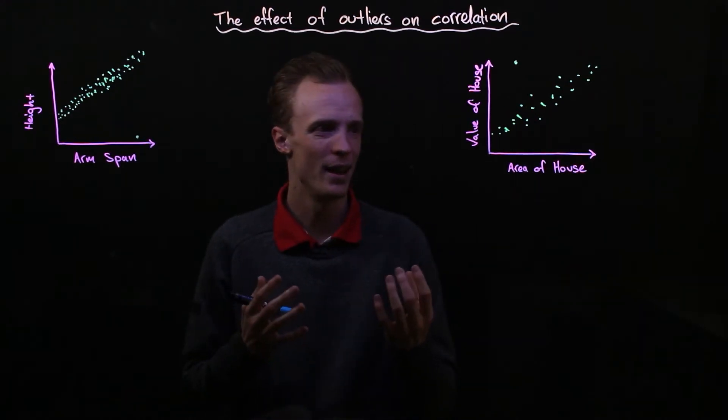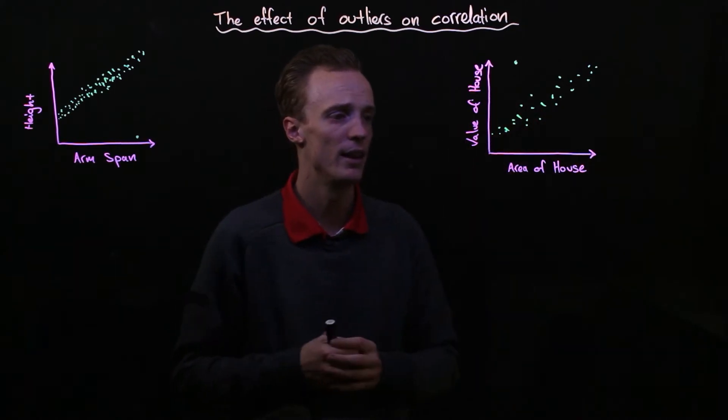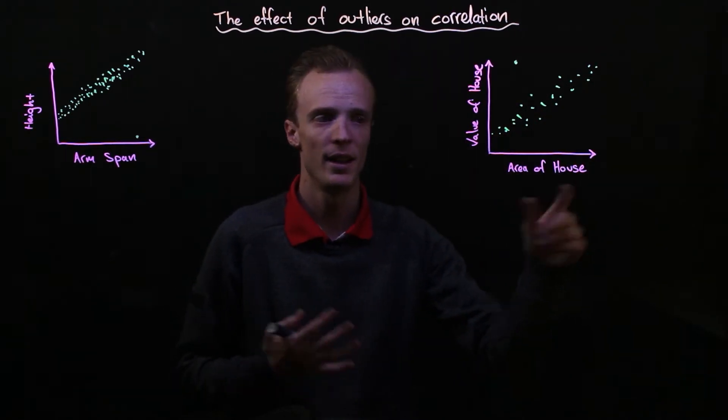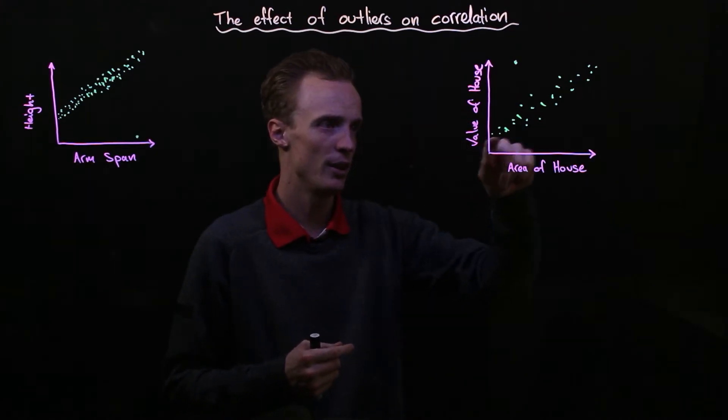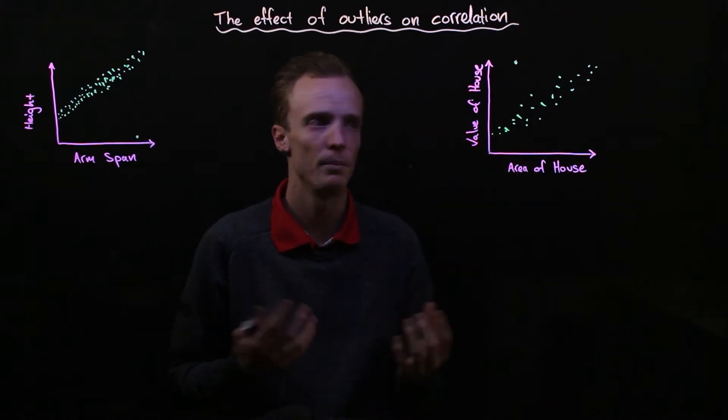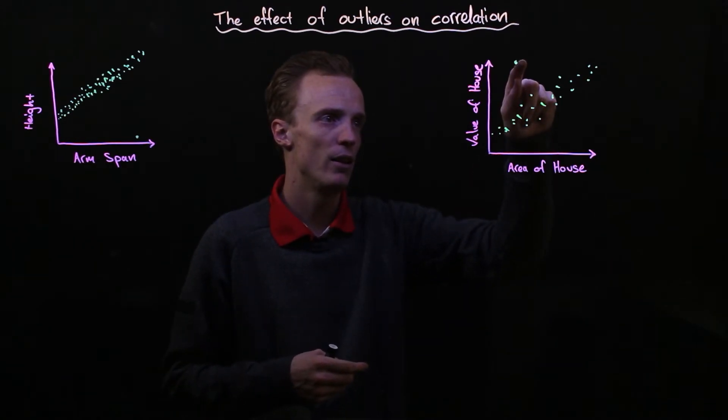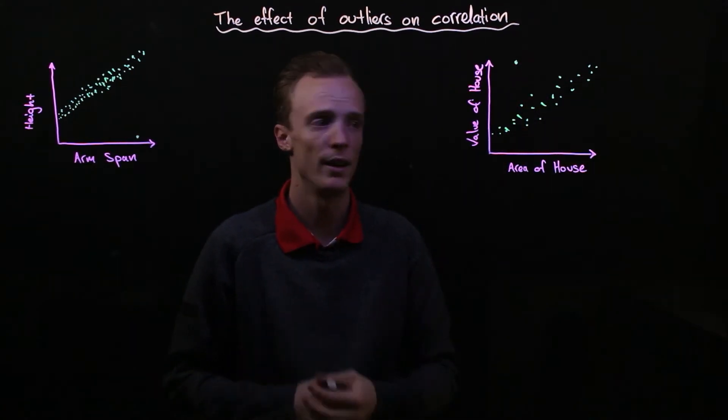Now if you compare that with the example I've got over here, where I'm looking at the area of a house against the value of that house, you can still see that I've got a correlation between my data points, but I've got an outlier here that doesn't tend to follow the same trend.